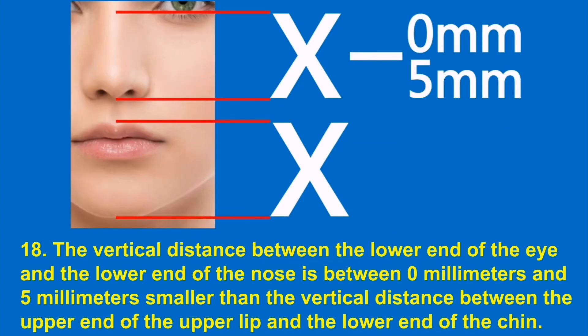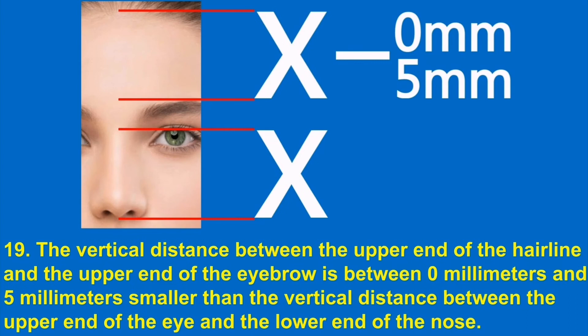18. The vertical distance between the lower end of the eye and the lower end of the nose is between 0 millimeters and 5 millimeters smaller than the vertical distance between the upper end of the upper lip and the lower end of the chin. 19. The vertical distance between the upper end of the hairline and the upper end of the eyebrow is between 0 mm and 5 mm smaller than the vertical distance between the upper end of the eye and the lower end of the nose.